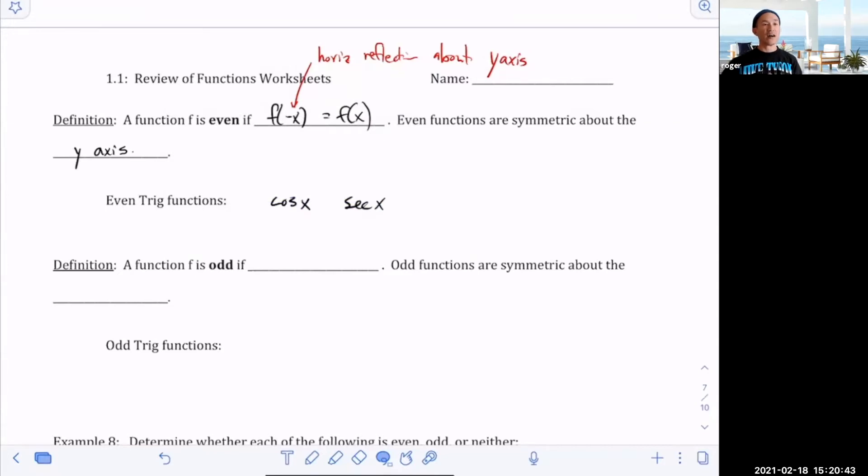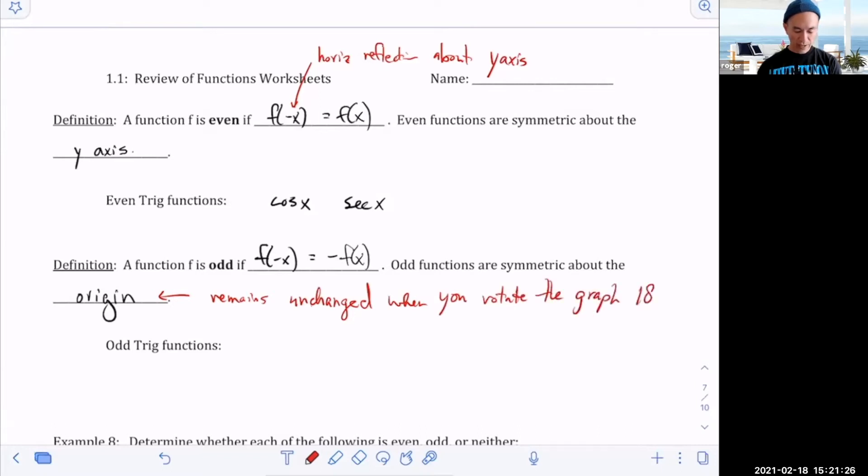A function is odd if when you take your function, you got f of negative x is equal to negative f of x. So odd functions are symmetric about the origin. And what it means to be symmetric about the origin, basically that means it remains unchanged when you rotate the graph 180 degrees.